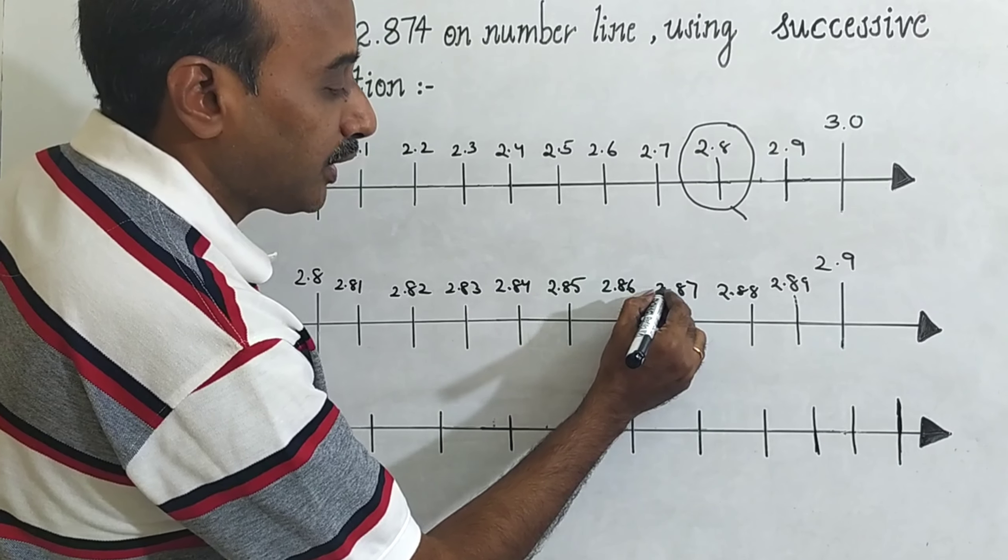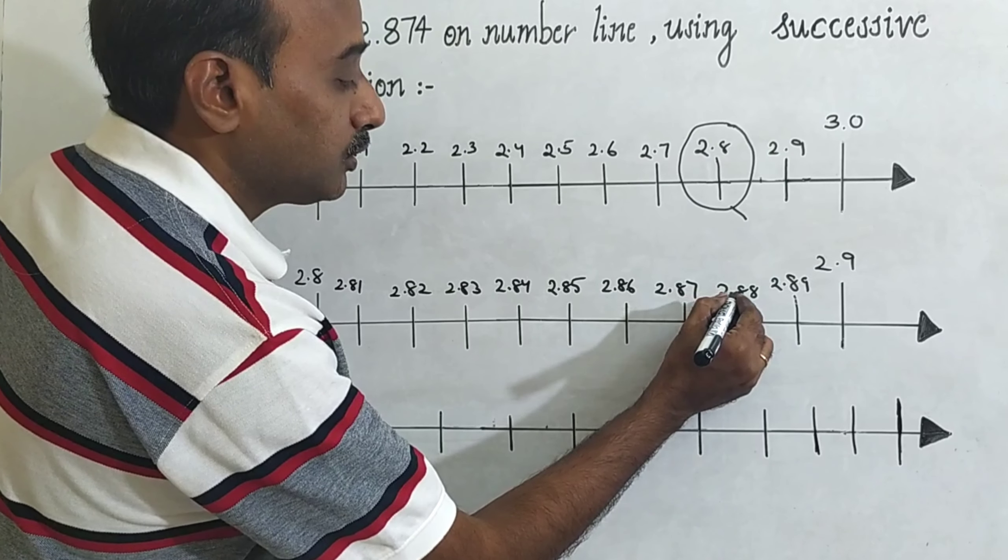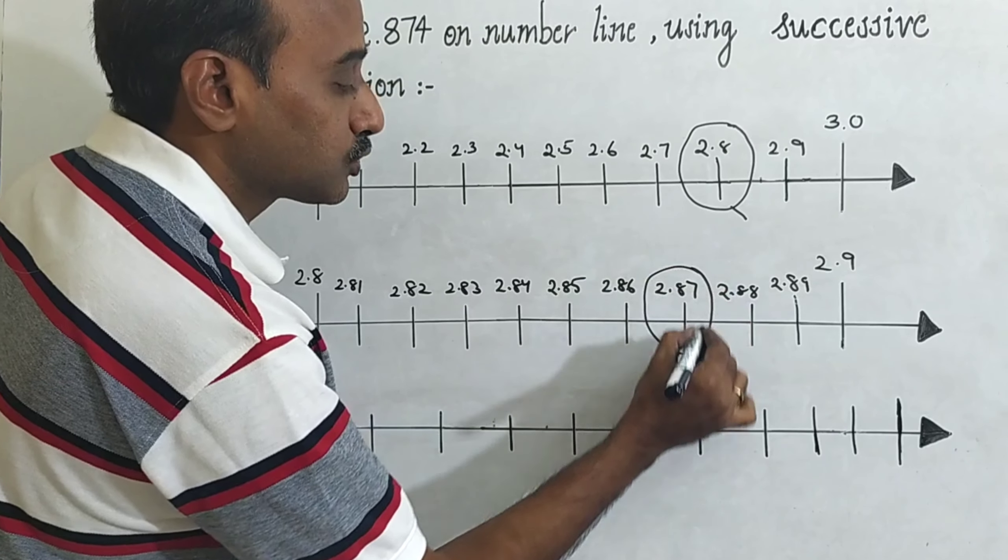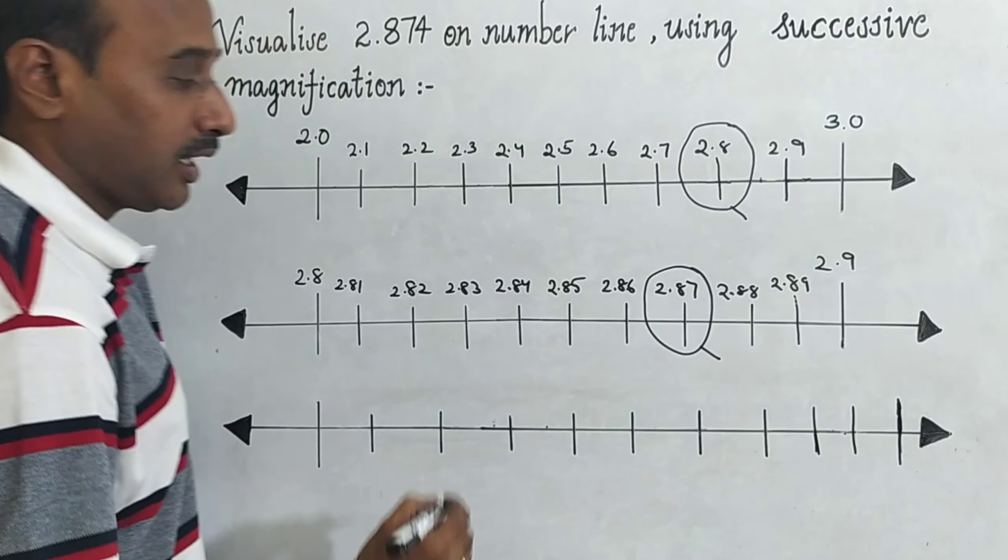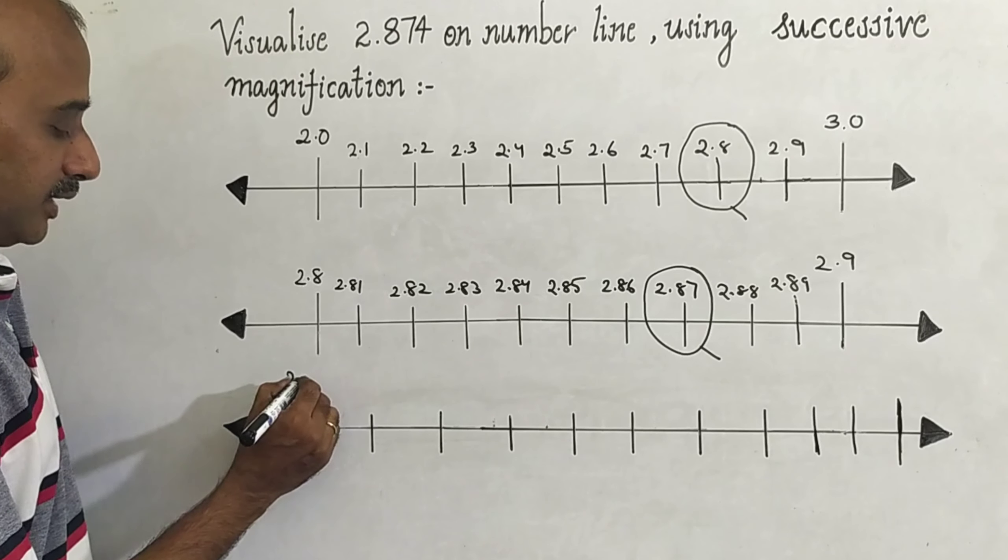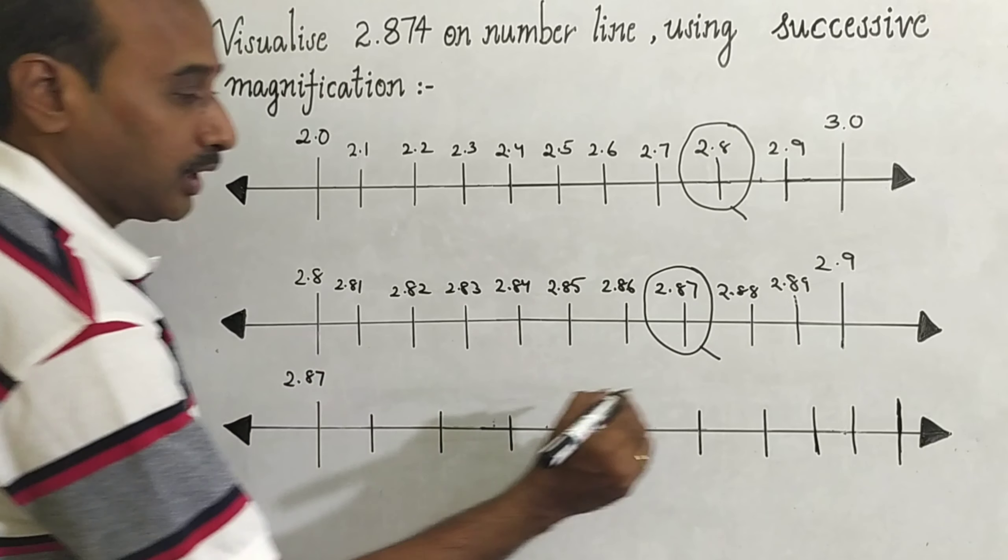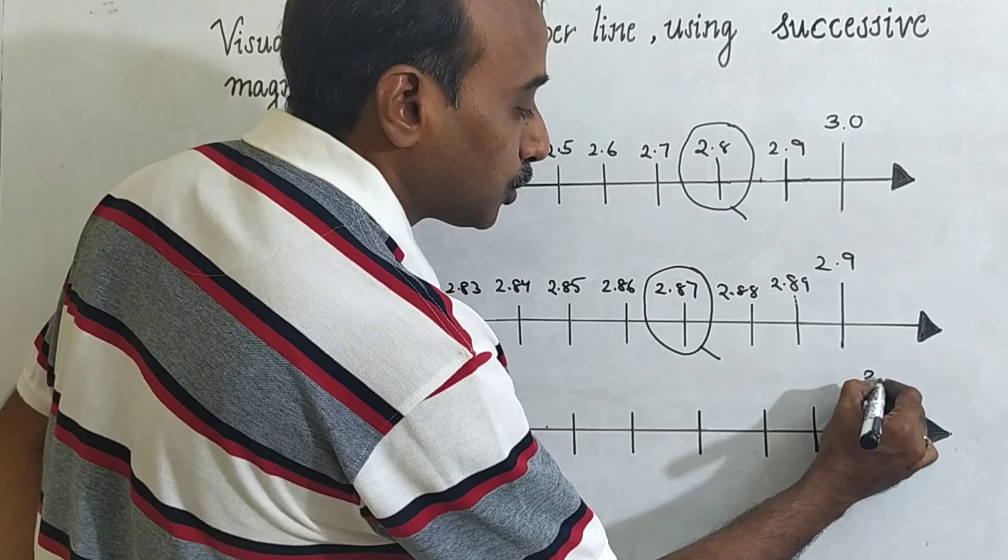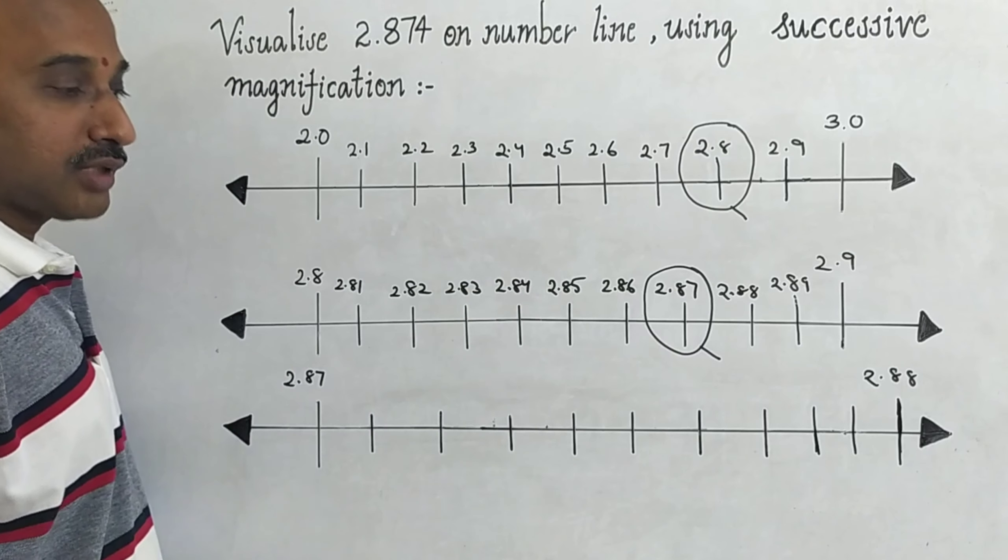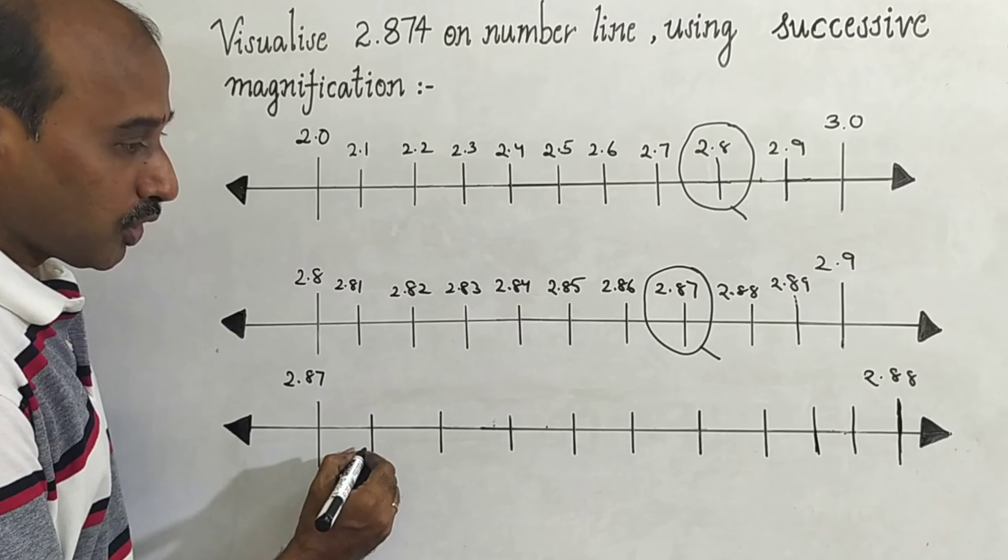Now you can see this is 2.874, where it is 2.87. It is in between 2.87 and 2.88. Now you can magnify this 2.87. Now take on the number line 2.87, here you can take 2.88, again you can divide into 10 equal parts.